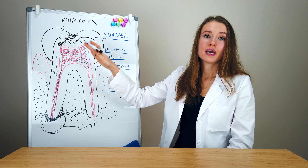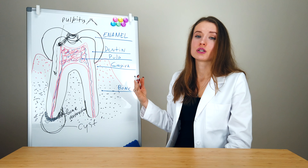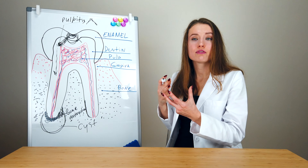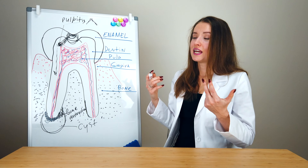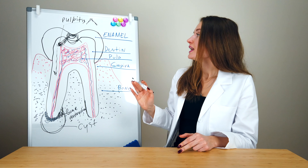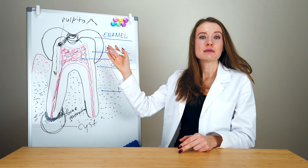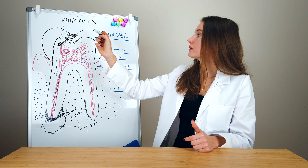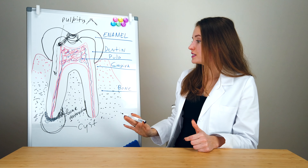If we leave pulpitis untreated for a very long time, the infection is going to spread down and it is going to go out from the apex of the root, causing bone destruction — or periodontitis. If you leave this periodontitis untreated, it is going to develop into a cyst.